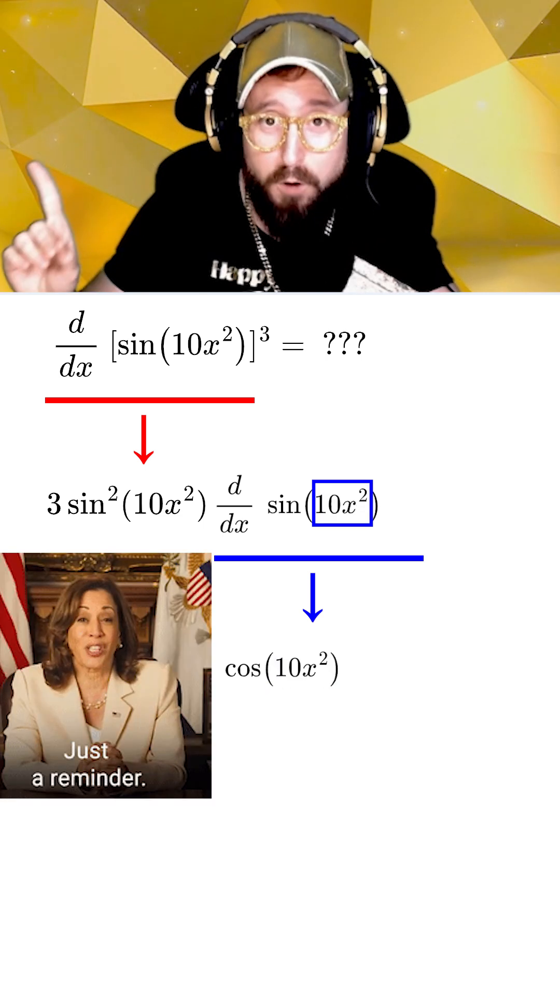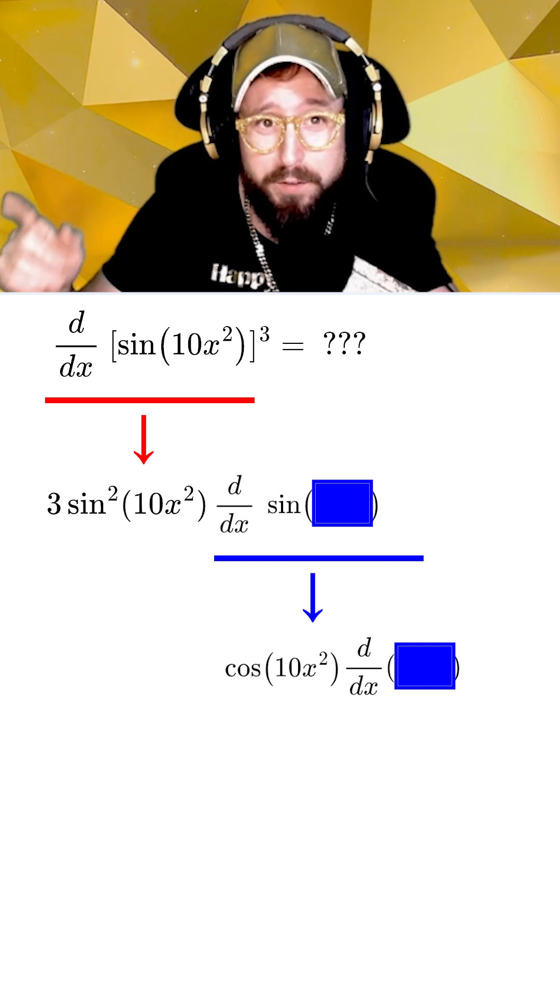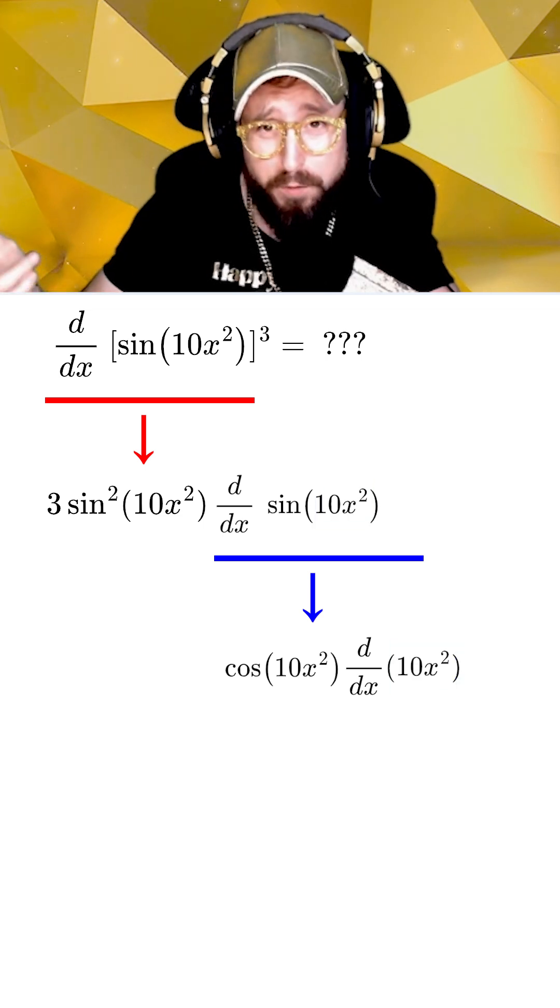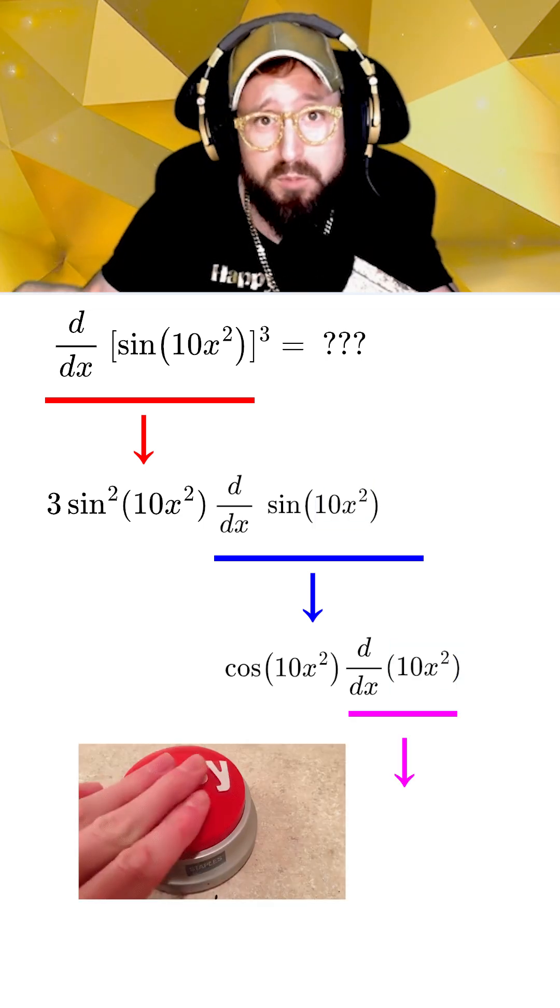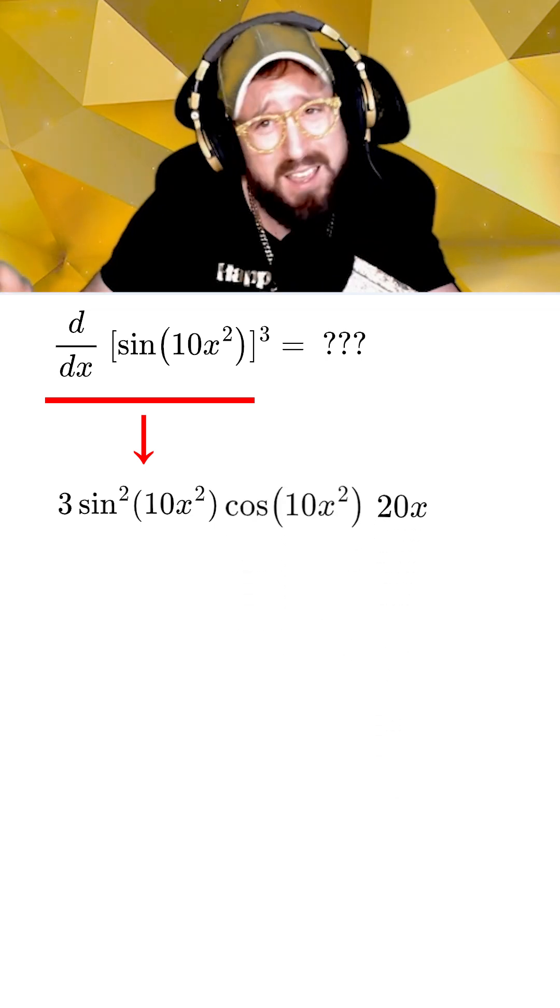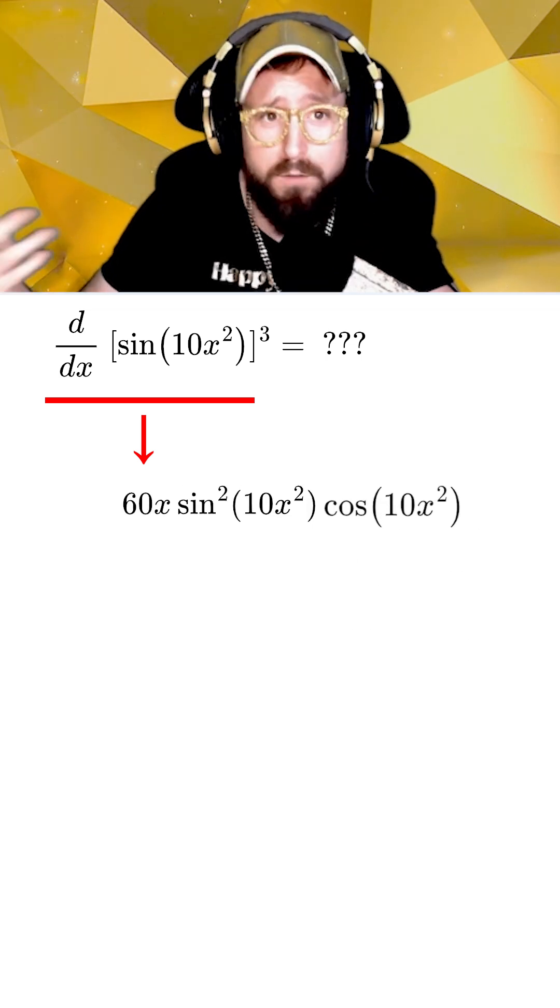Now plug 10x squared back in, but don't forget, we still have to multiply by the derivative of our new box. And luckily, the derivative of 10x squared is easy and just becomes 20x. So all that's left to do is bring everything together and combine some terms, which gives us our final answer below.